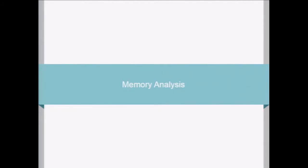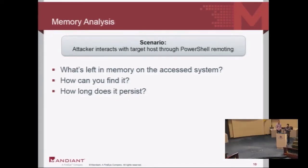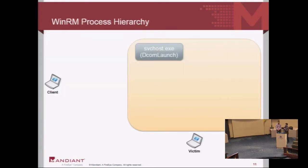For the first part of sources of evidence, we're going to talk about memory analysis. The idea is to solve the worst case scenario: I'm a bad guy on host A trying to laterally access host B, and I'm only using PowerShell remoting — not writing any scripts to disk on the target system, simply using WinRM and the built-in remoting capabilities to remotely execute code. Given forensic access to that system, how much is left and how long does it stay? How easily could you reconstruct what happened?